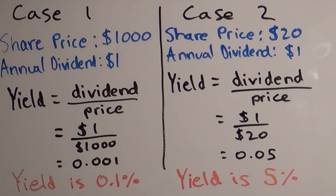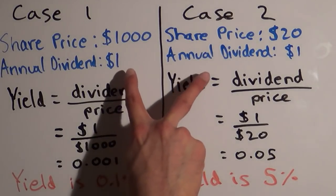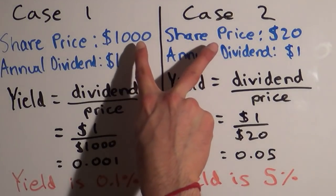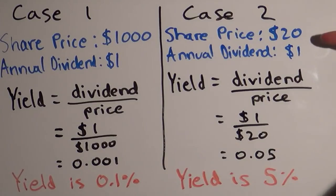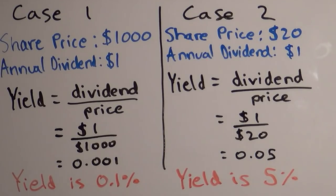So that's dividend yield — the dividend relative to the price. The twenty dollar share has a yield of five percent. That means I'll be getting five percent of the money I paid every year. It means five percent of the price will be paid to me in dividends.